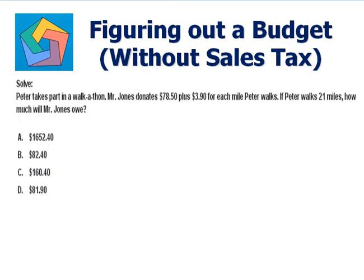Next problem: Peter takes part in a walkathon. Mr. Jones donates $78.50 plus $3.90 for each mile Peter walks. If Peter walks 21 miles, how much will Mr. Jones owe? Now, $78.50 is the fixed amount Mr. Jones is donating, and $3.90 is the variable amount for each mile. Peter is walking 21 miles.